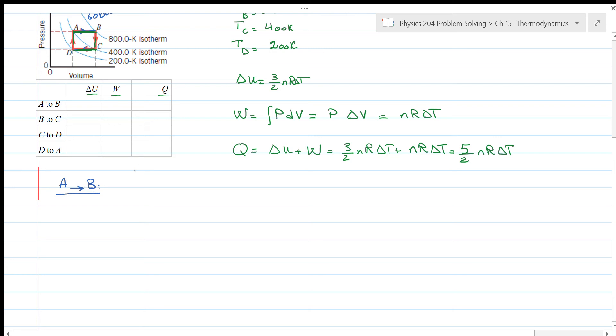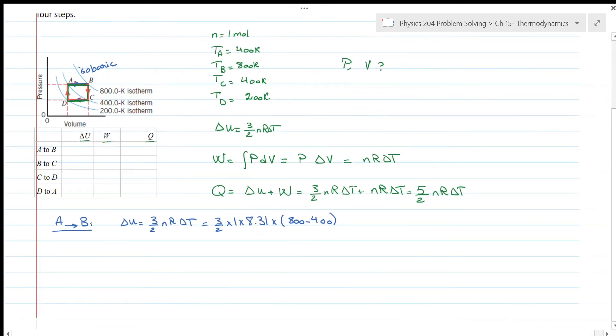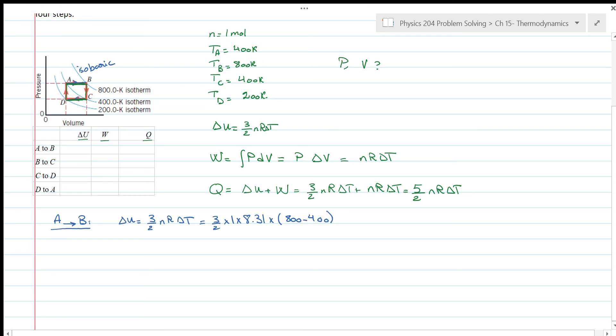So from A to B, we can start by calculating the change in the internal energy: 3 over 2 nR delta T. So this is 3 over 2 times 1 times 8.31 times (800 minus 400). If we check the given, the temperature at B is 800 while the temperature at A is 400 Kelvin. So if we substitute these, we will get 4,986 Joules. The work is nR delta T, which equals 3,324 Joules. And finally, we can find Q by adding the internal energy and the work done, and this will give us 8,310 Joules.